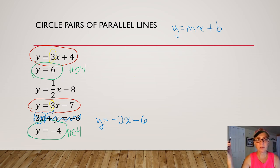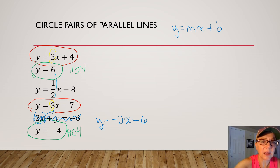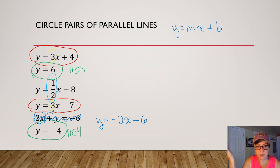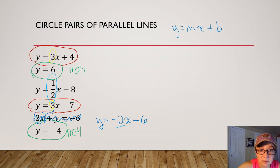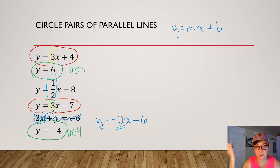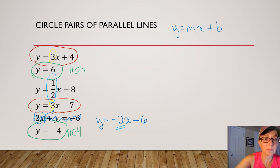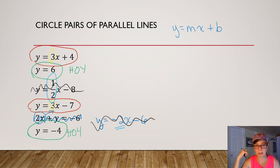My third equation has a slope of one half. The only other line we have left is the one we worked on, and it has a slope of negative two. So this equation and that equation do not represent a set of parallel lines.